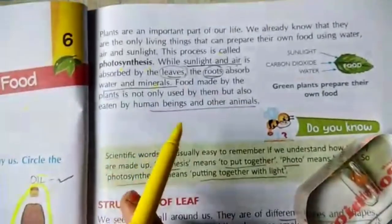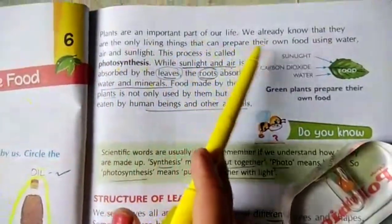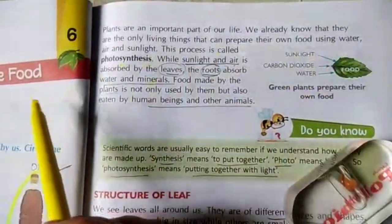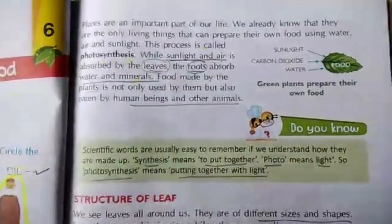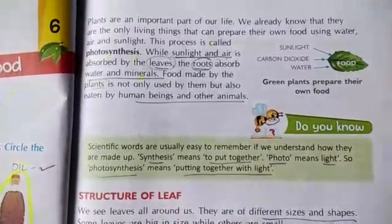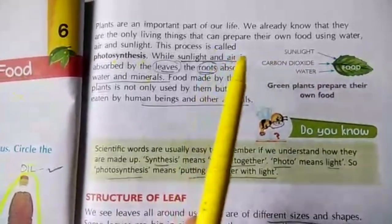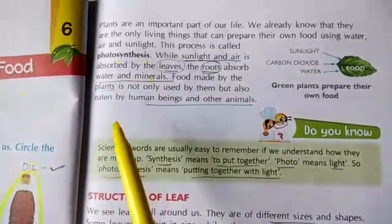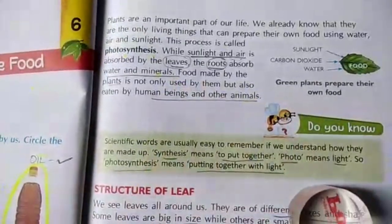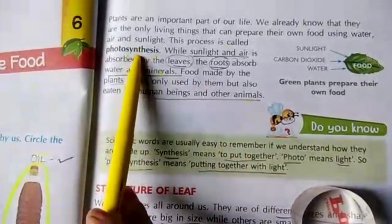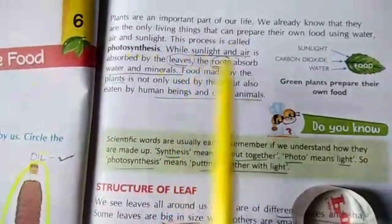Plants are an important part of our life. We already know that they are the only living things that can prepare their own food using water, air and sunlight. This process is called photosynthesis. Photosynthesis is the process in which green plants use sunlight to make their own food, and it is necessary for life on earth. Photosynthesis requires sunlight, chlorophyll, water and carbon dioxide gas.